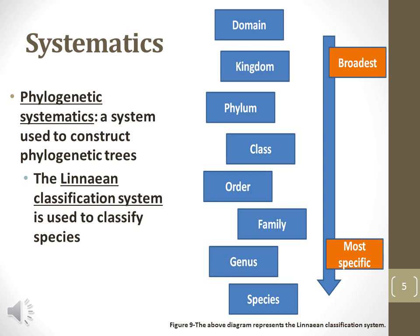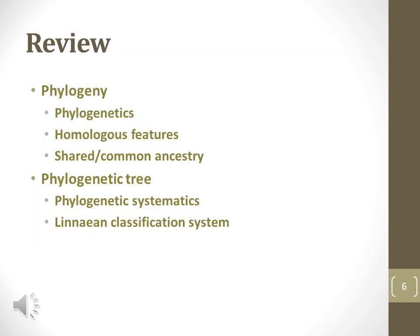Phylogenetic systematics is a form of taxonomy that labels the different lineages in a phylogenetic tree. The classification of phylogenetic groups is based on the Linnaean classification system previously discussed. This is a review of the important topics relating to phylogenetic reconstruction and classification.